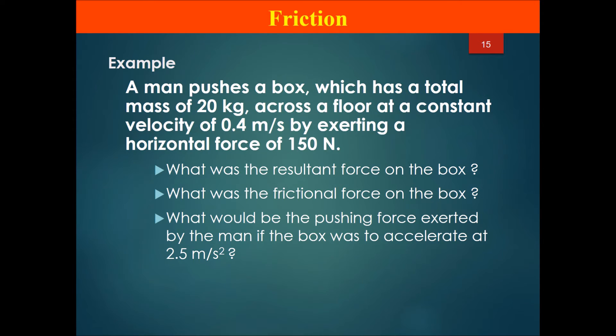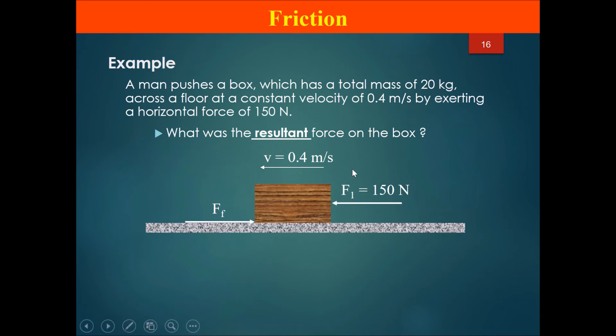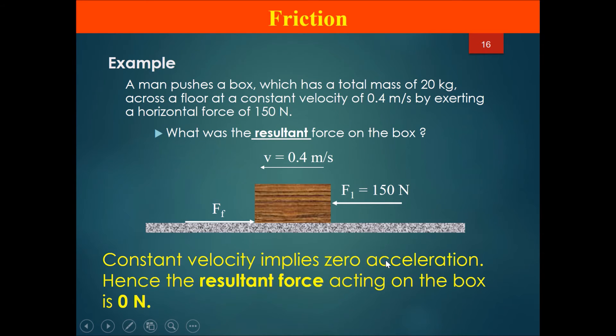Let's go to the solutions. What was the resultant force on the block? Constant velocity implies zero acceleration, because if there is a constant speed or constant velocity, it means the speed does not change and therefore the acceleration will be zero. Hence, because F = ma and if a is zero, the resultant force has to be 0 N.